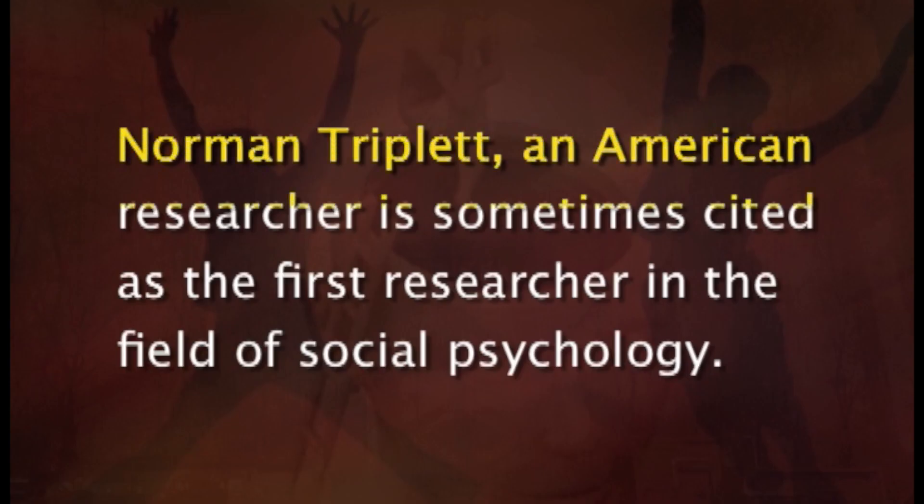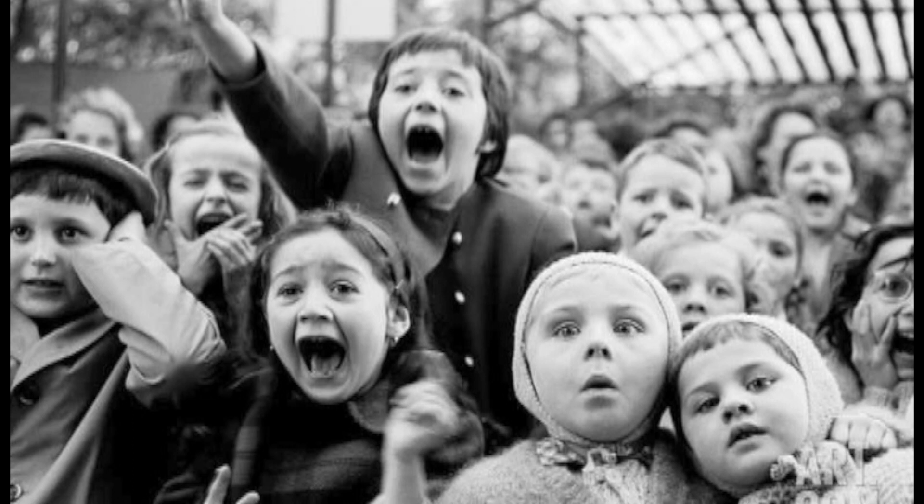Norman Triplett, an American researcher, is sometimes cited as the first researcher in the field of social psychology. After some interesting observations, he asked school children to wind fishing line onto reels as quickly as possible in two conditions — one with the presence of others and one without. He observed that children's performance improved in the presence of others. Early researchers also tackled questions about how facial expressions and body movements reveal people's feelings, how people conform to the suggestions of others, and how the roles experimenters play might influence research outcomes.